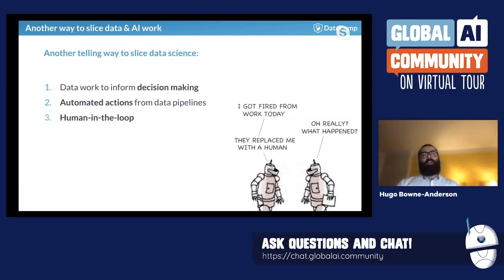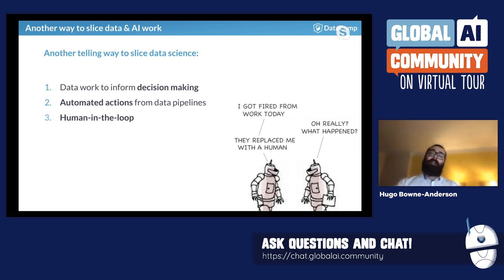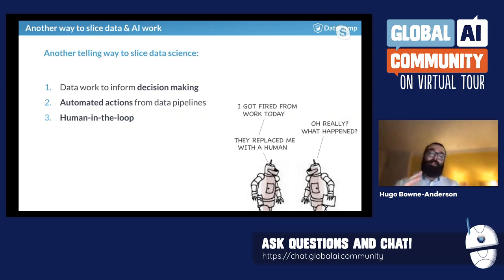Another way to slice data science: there's data work to inform decision-making, there are automated actions from data pipelines, and there's a hybrid — humans in the loop — whereby we have machines doing what they do really well, and humans either as maintainers or actively making decisions at points in the pipeline. Deep Blue beat Kasparov at chess back in the day, and yet today the best chess players are what are known as centaurs — human-computer pairs.